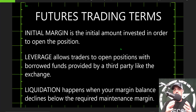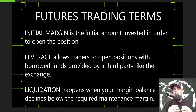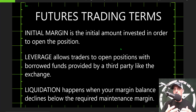Initial margin is essentially the initial amount invested in order to open the position — it's the amount of money you're bringing and placing at risk in this particular trade. Leverage allows you to essentially increase your positions by borrowing funds provided by a third party, like in this case the exchange being KuCoin.